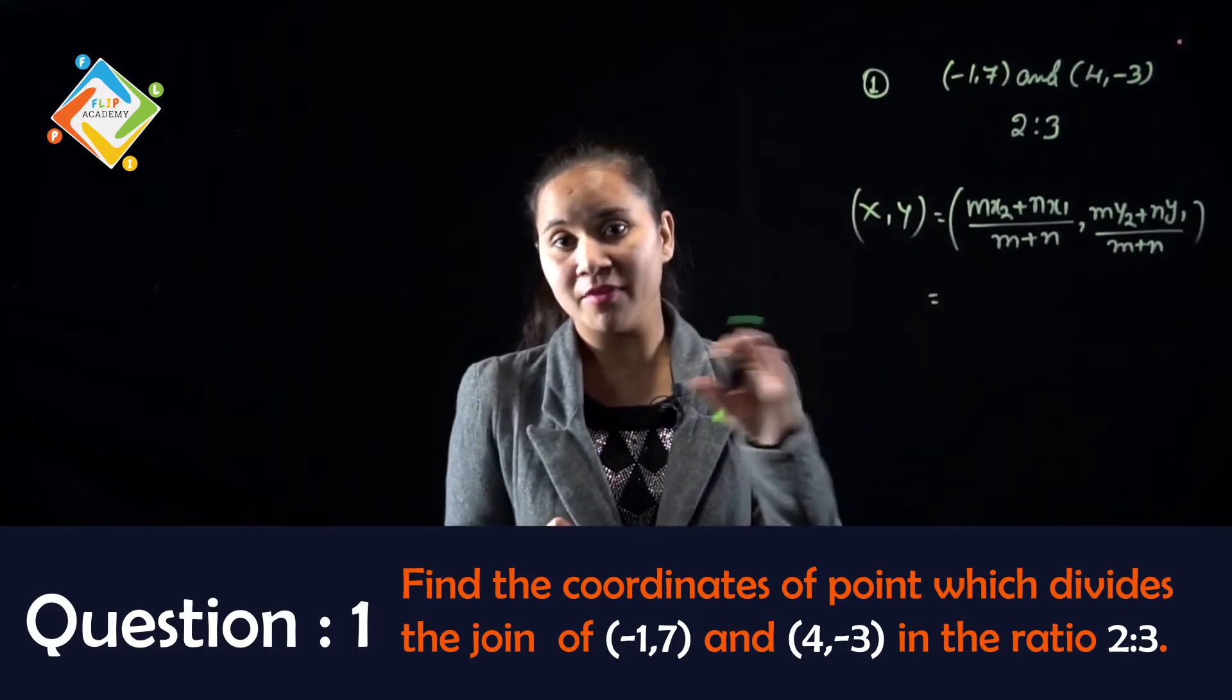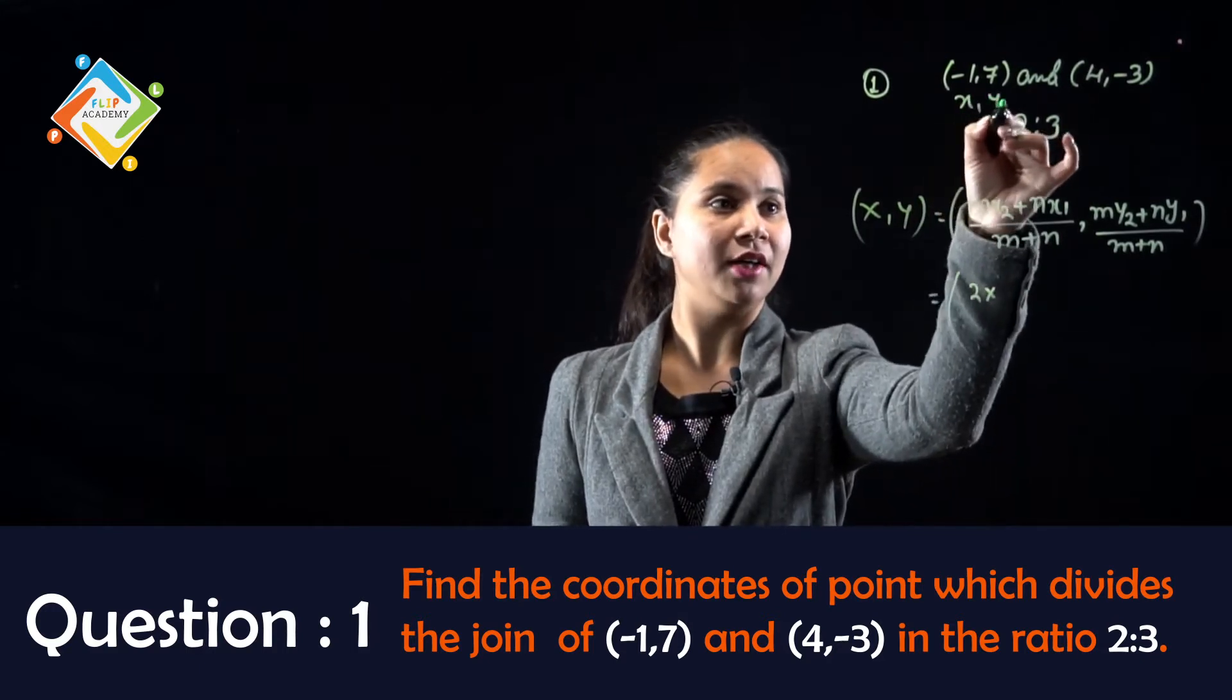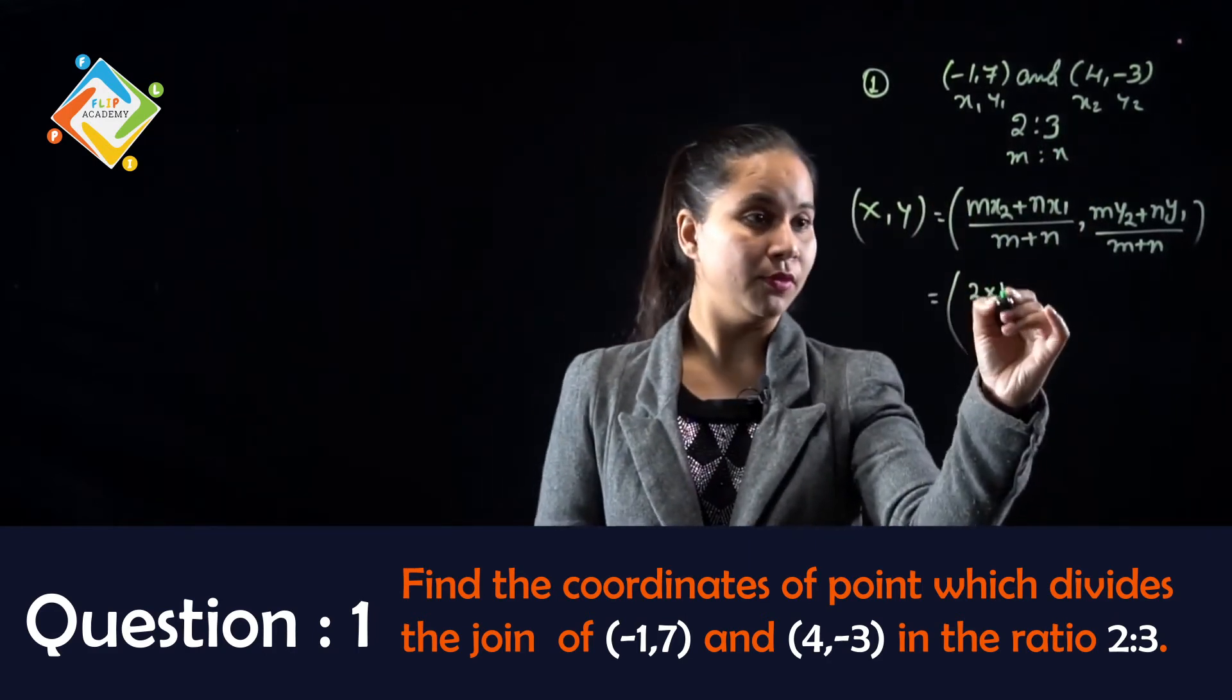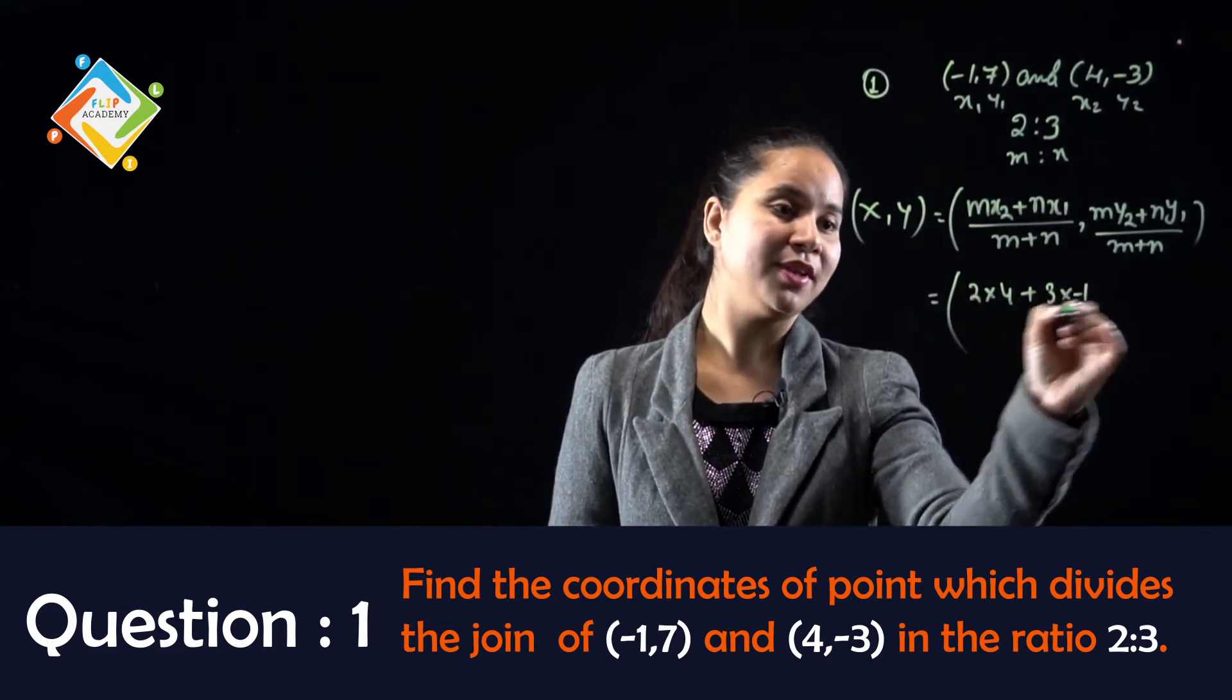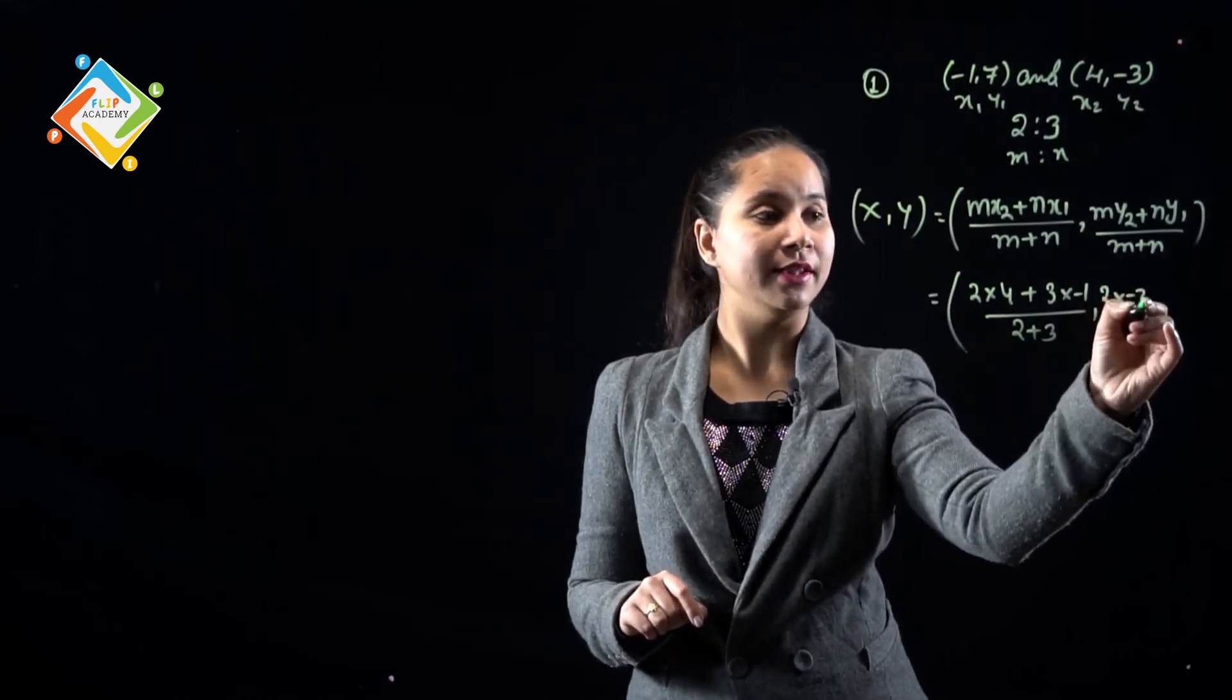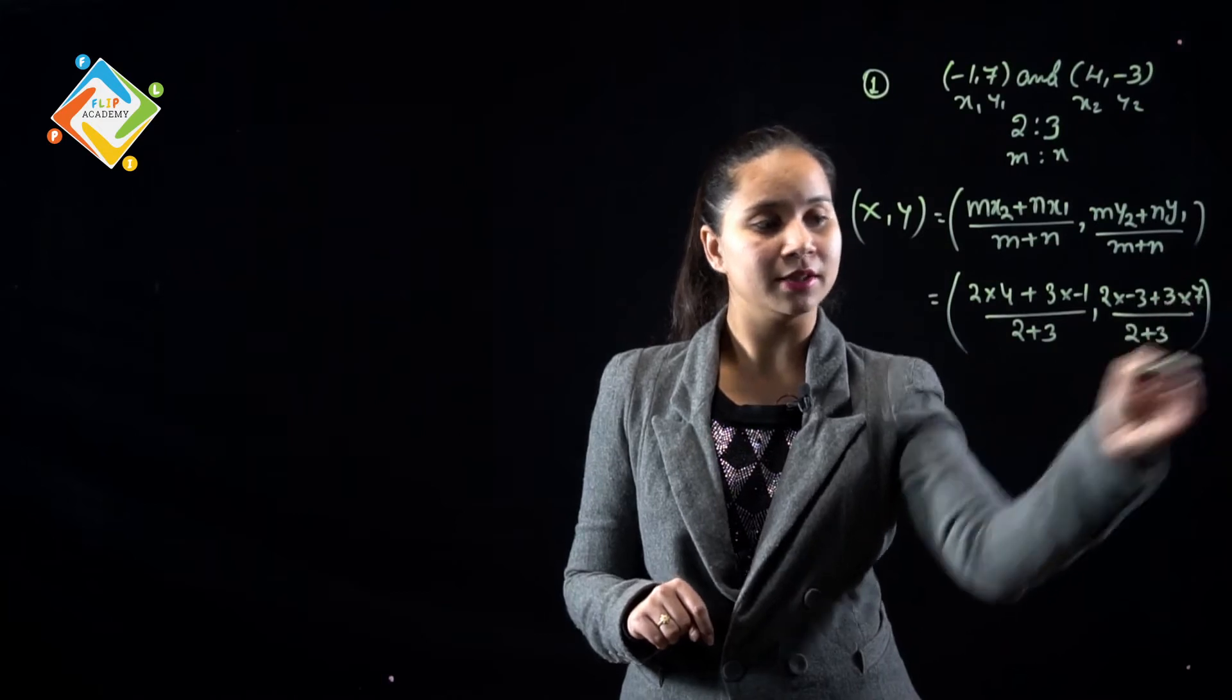Now let's substitute the values into the formula. The value of m is 2, this represents x1,y1, this is x2,y2, and this is m ratio n. So m's value is 2 and x2's value is 4. n's value is 3 and x1's value is -1. n's value is 3 and y1's value is 7, upon m plus n. And m is 2, y2 is -3, upon 2 plus 3.